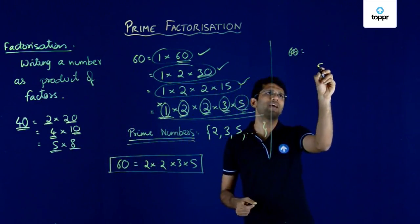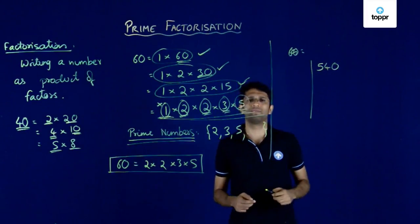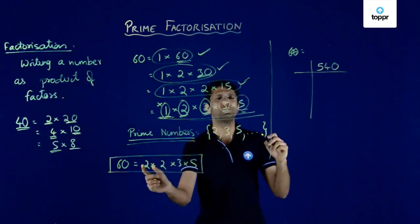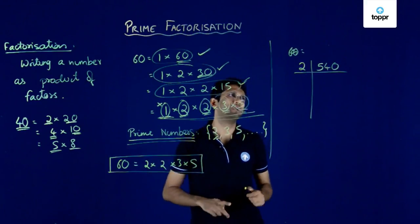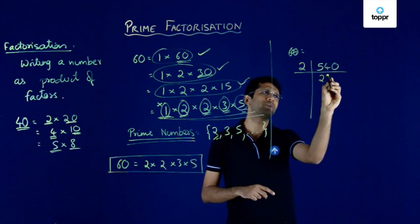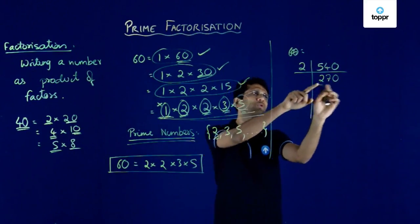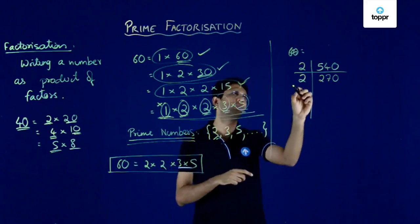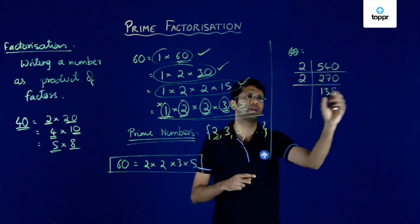Let's take the number 540 and try to find its prime factorization. We will always start with the smallest prime number which is 2. So we start dividing by 2: 540 divided by 2 gives us quotient 270 and remainder 0. Next, we divide 270 by 2, and we get 135 as the quotient and 0 as the remainder.